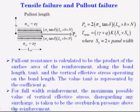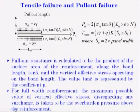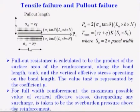Pullout resistance is calculated as the product of the surface area of the reinforcement along the bond length. As stated, tan(delta) and the vertical effective stress operate on the bond length, and the value of tan(delta) is represented by coefficient mu. Another term coming into picture is n — n means how many numbers in that direction.